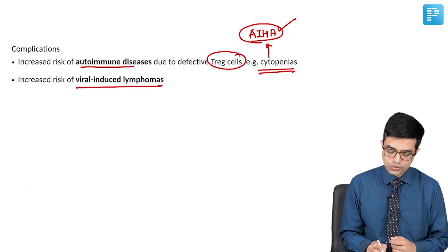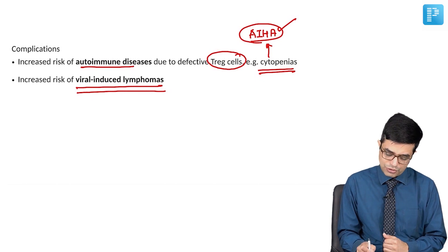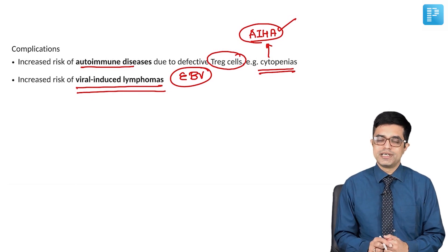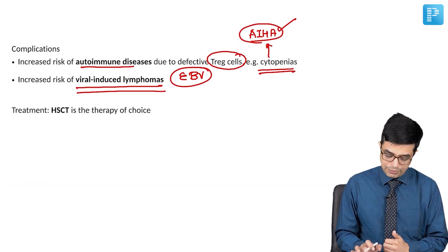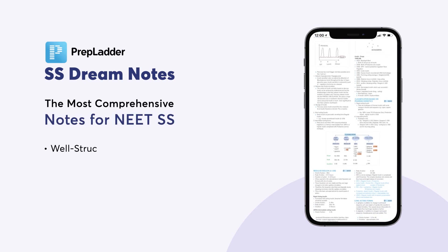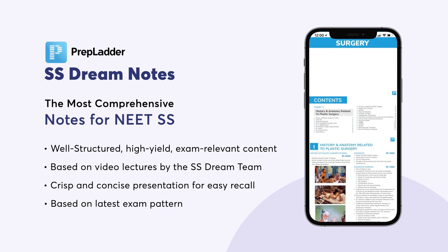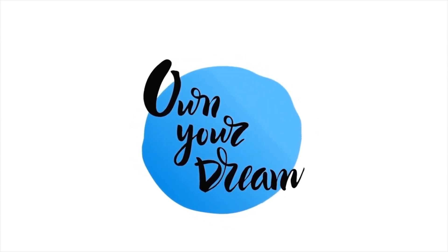There is also increased risk of viral-induced lymphomas — specifically Epstein-Barr virus related lymphomas are commonly seen in children with Wiscott-Aldrich syndrome. The treatment of choice is hematopoietic stem cell transplant (HSCT).